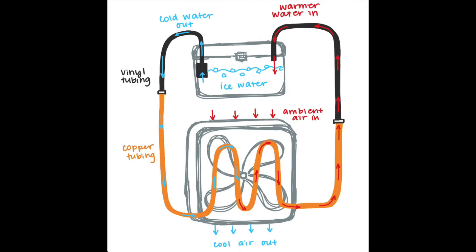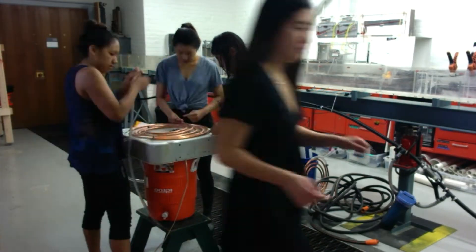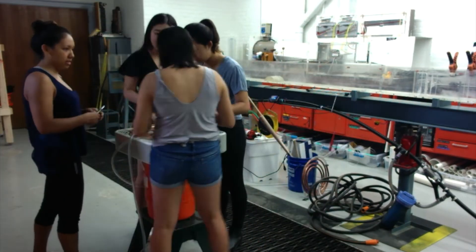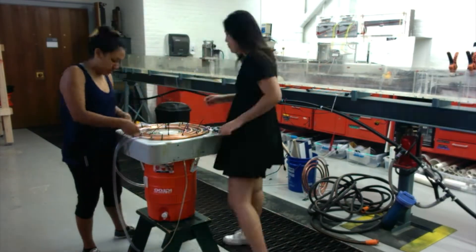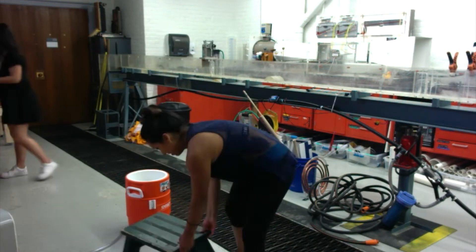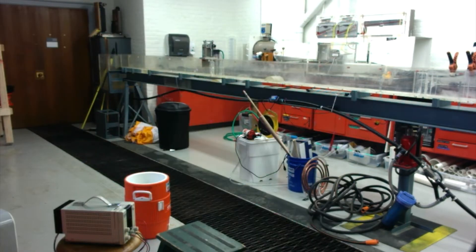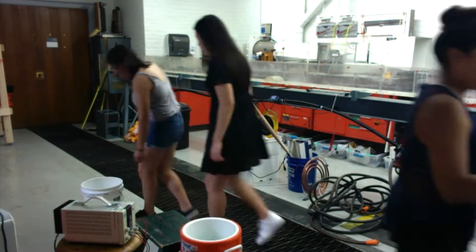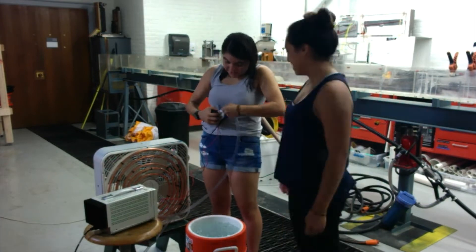More specifically, our project aimed to demonstrate the thermodynamic concepts of a heat exchanger and the latent heat of fusion. To do this, we created an AC unit using a fan and a cooler containing ice water. The ice water was pumped through the copper tubing across the fan. Since the temperature of the entering water was much colder than the temperature of the surrounding air, the cold water spontaneously absorbed the heat from the air, in accordance with the second law of thermodynamics. We chose copper as a tubing material because it has one of the highest thermal conductivities, making it ideal for heat transfer. We took advantage of copper's high thermal conductivity by maximizing the surface area of the copper tubing exposed on the surface of the fan.